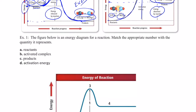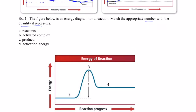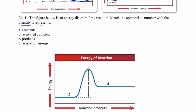The figure below is an energy diagram for a reaction. Take a minute and match the appropriate number with the quantity it represents. You'll see the numbers 1, 2, 3, and 4 and vocabulary terms listed underneath. Pause the video, try it without my help, then come back and we'll see how you did.